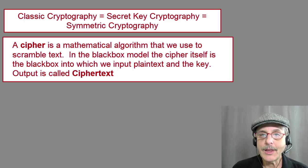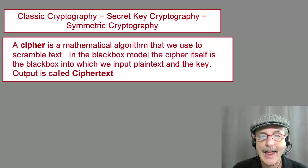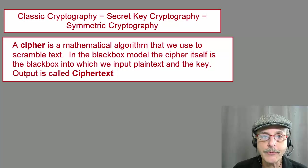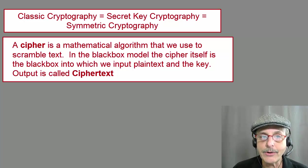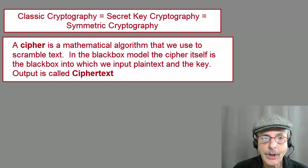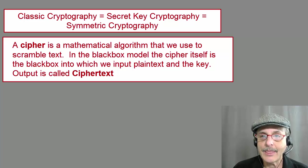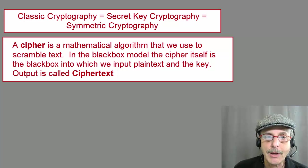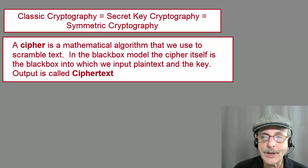A cipher is some sort of mathematical algorithm that we use to scramble text. In the black-box model, the cipher itself is the black box into which we input plain text and the key. The plain text is the message that we wish to encrypt, and the key is simply a string of numbers, generally binary ones and zeros. The output we get from the black box is called ciphertext, which is the plain text that has been encrypted in such a way that it can only be decrypted by someone who has the same key that originally encrypted the data.